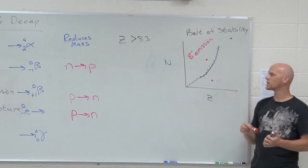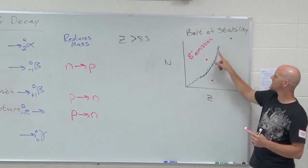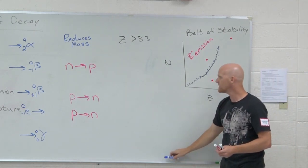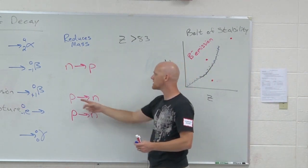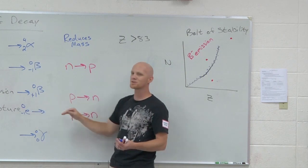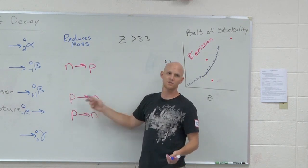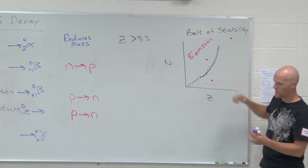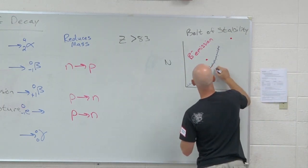Because ultimately, that will lower your n over z ratio to getting closer to being on this belt of stability. Whereas on the other side of things here, why would you ever turn a proton into a neutron by positron emission or electron capture? Well, if you have too many protons and not enough neutrons. If your n over z ratio is too low. And so, that's where those other two occur.